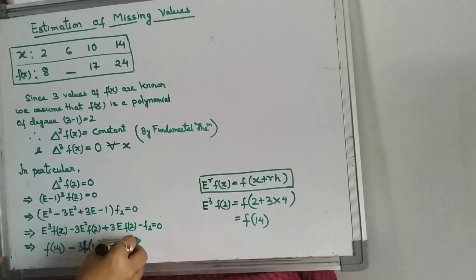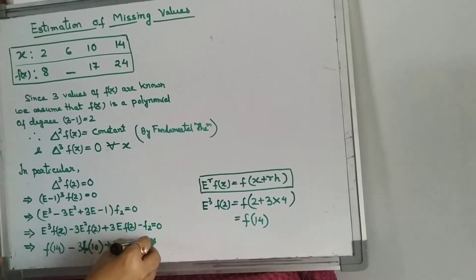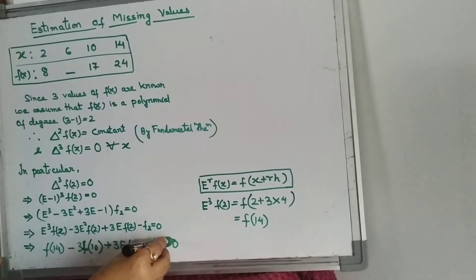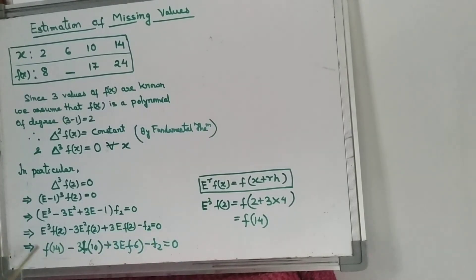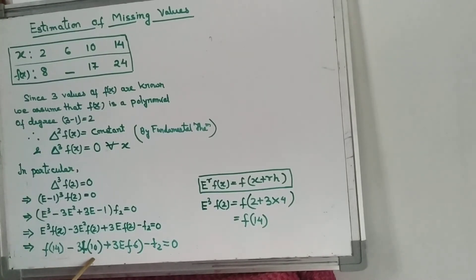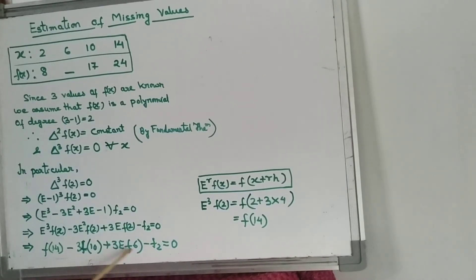Minus f(2) is equal to 0. Now we know the f(14) value is 24, so we put 24 here. Minus 3f(10)—f(10) value is 17, so we put 17 here. Plus 3 times f(6)—f(6) value is unknown, so we keep it as it is.